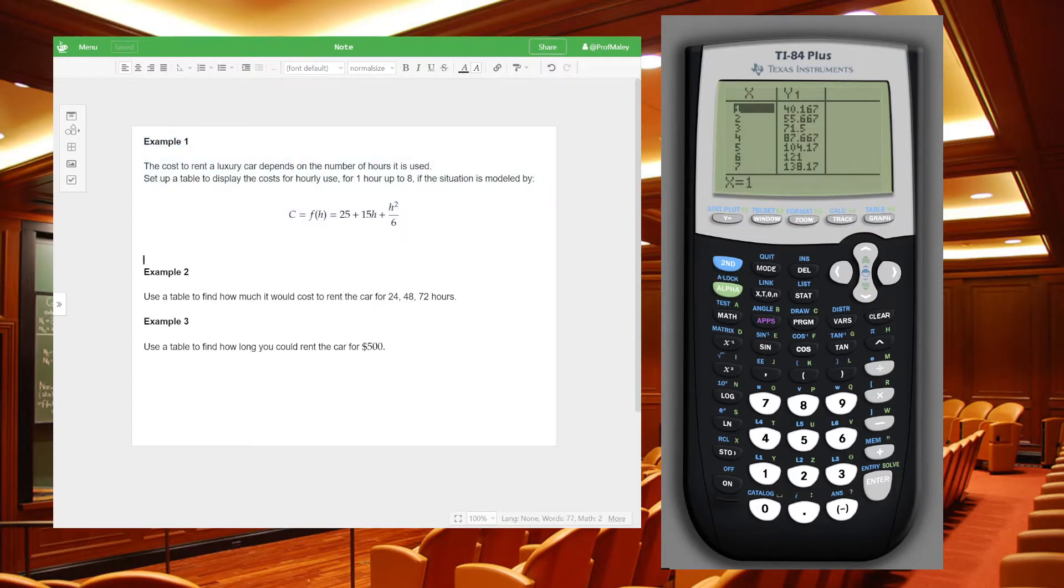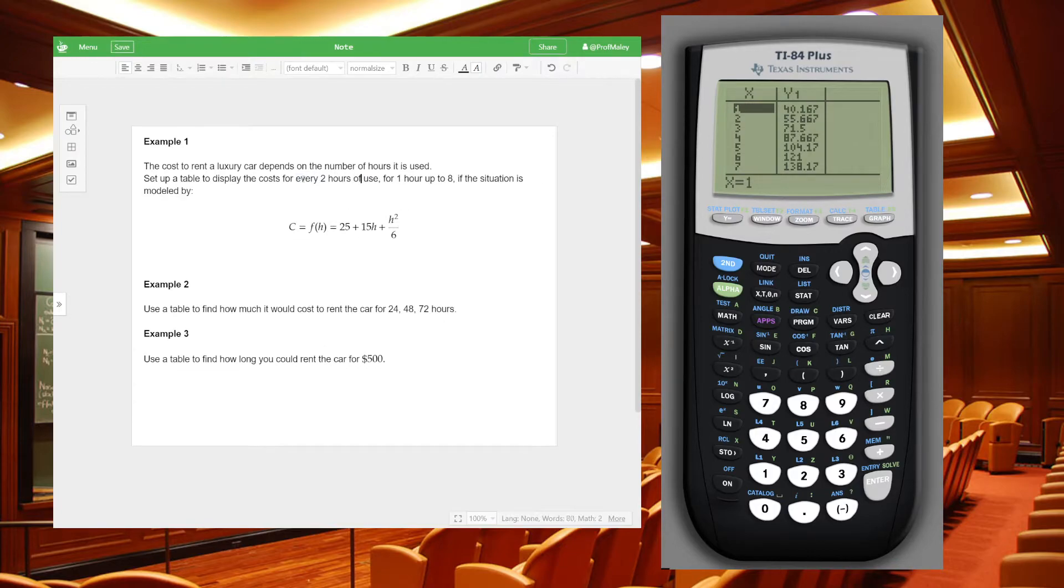So that's example one, just generating a table the way you wanted it to. Now, a way you could change this would be, let's say I wanted it to be every two hours. Every two hours of use for hour two up to eight. Then we're going to change how the table's set up. We can come up here and say, oh, I still want to start. Well, we want to start at two. And we're going to go up by two hours. And then see how that changes the table. So here we go. Hour two, four, six, eight. So we're advancing this more quickly and seeing what costs go with it.